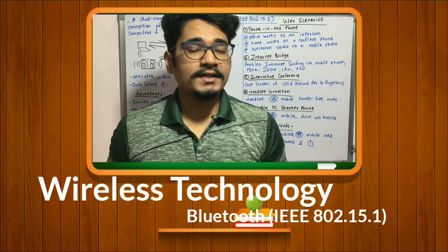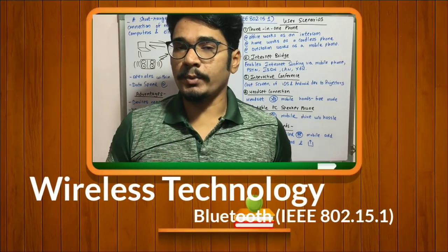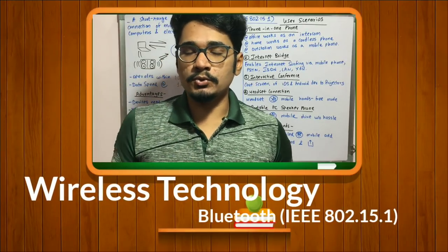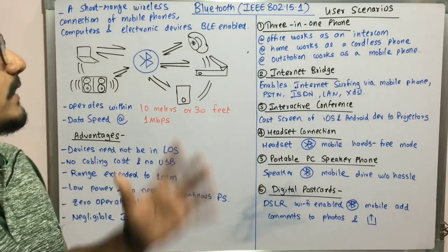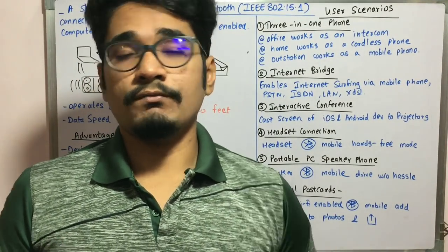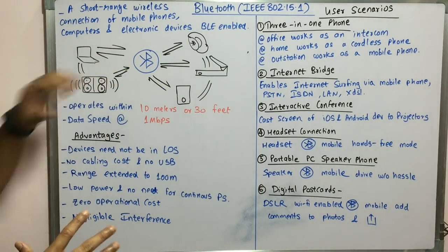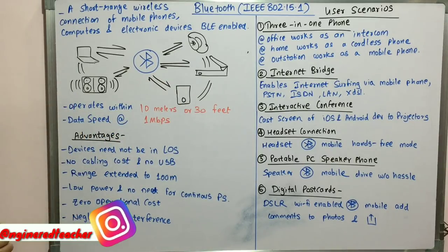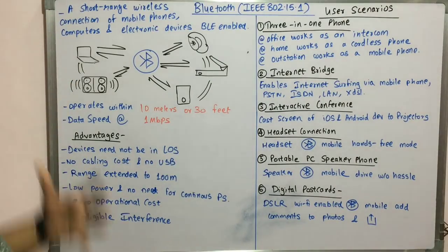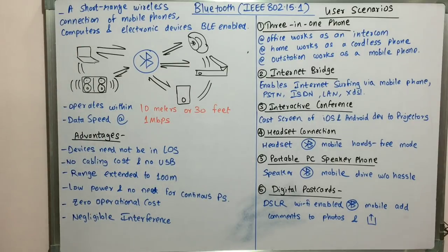Welcome back to another fresh episode on wireless technology. Today we'll be considering the very first standard of the IEEE 802.15.1, that is Bluetooth — the most familiar name known among all of us. We'll consider the basic idea and concept of what Bluetooth is and how these devices basically work. Bluetooth is a low power consuming technology that operates within a short range and provides wireless connection to mobile phones, computers, and Bluetooth-enabled electronic devices.